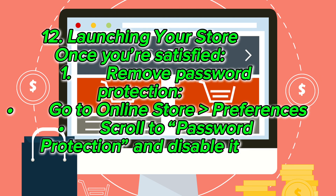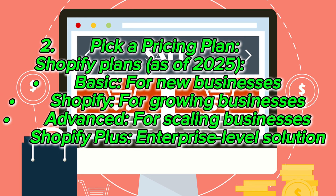Launching your store: Once you're satisfied, remove password protection by going to Online Store > Preferences, scrolling to Password Protection, and disabling it. Then pick a pricing plan. Shopify plans as of 2025 include Basic (for new businesses), Shopify (for growing businesses), Advanced (for scaling businesses), and Shopify Plus (enterprise-level solution).